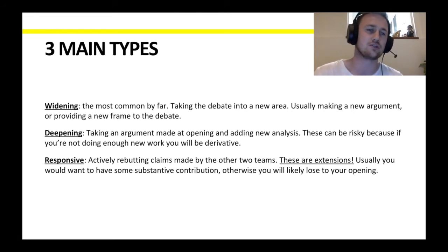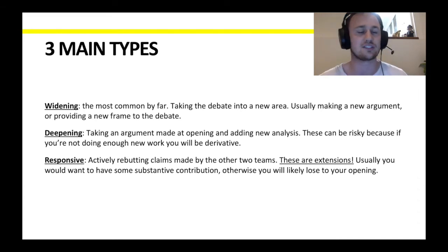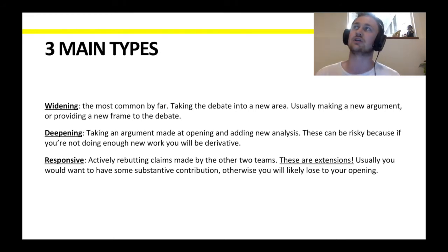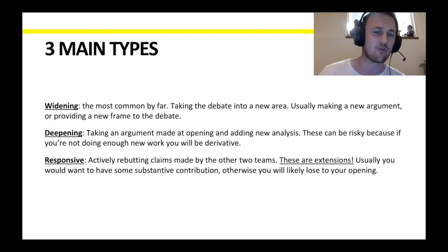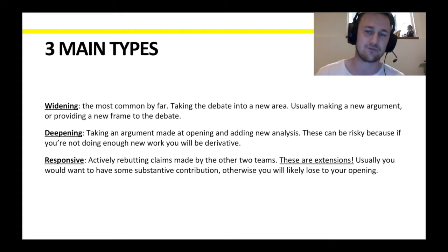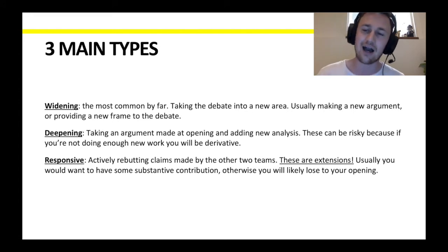The other problem with deepening extensions is you might not actually be helping your team win. If opening government spent time proving this policy is good for the economy and gave five really good reasons, and your extension just gives another six reasons why it benefits the economy, that's probably not that helpful — opening government have already done a good job establishing it. You've helped them win something they were already winning. These are valuable and useful, but be careful when you use them.